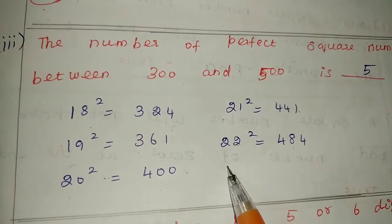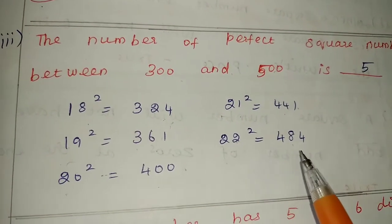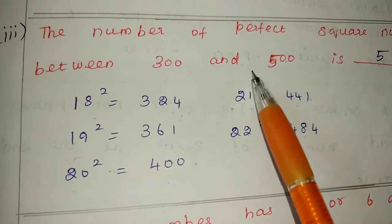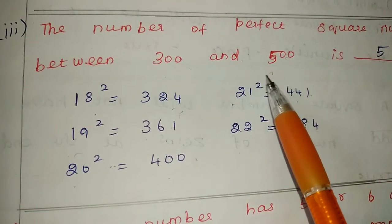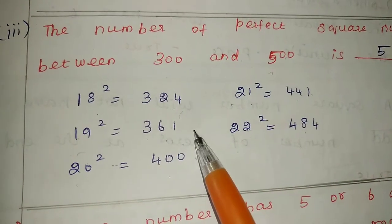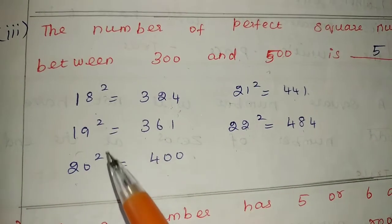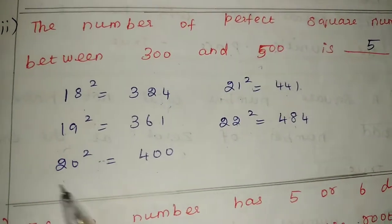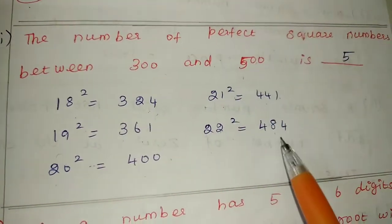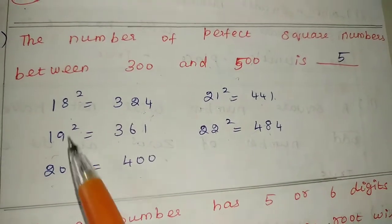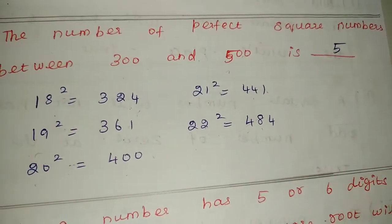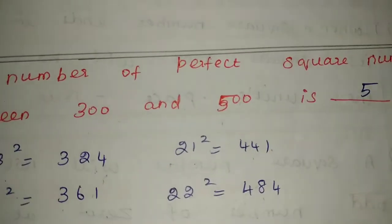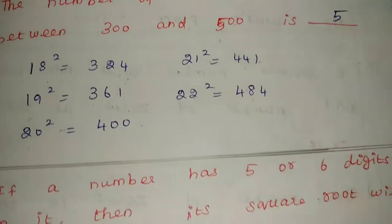23² goes above 500. So we need to count how many squares fall between 300 and 500. The values are: 324, 361, 400, 441, 484 — that is 1, 2, 3, 4, 5 perfect squares. So the answer is 5.